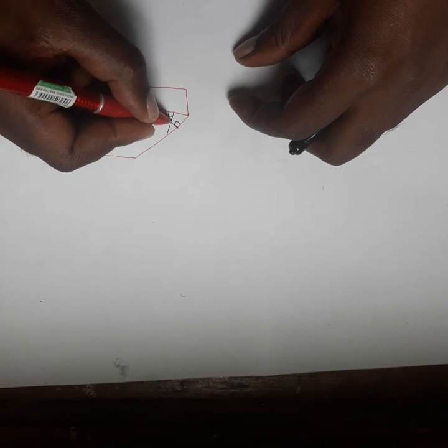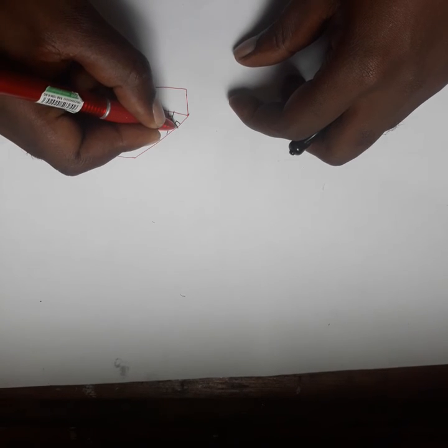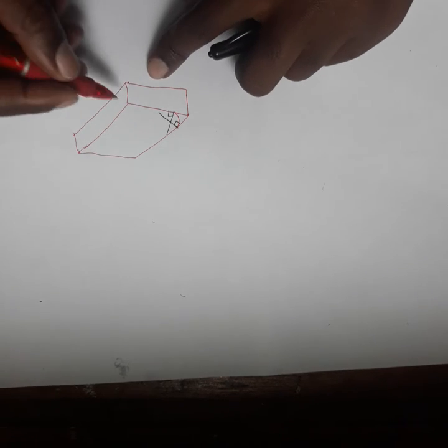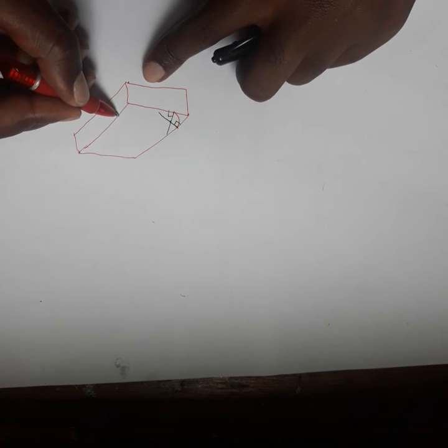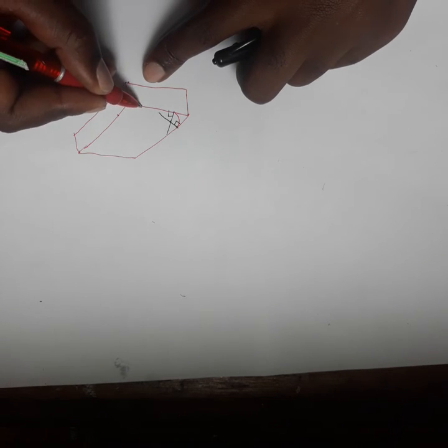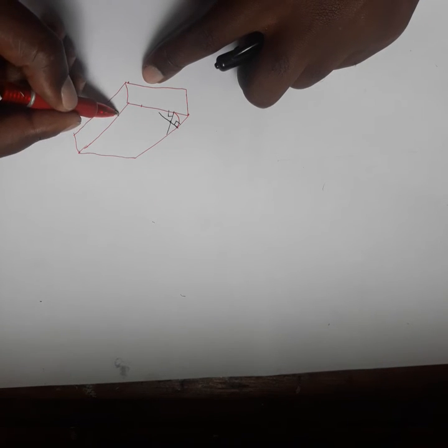Now you put your compass there. Put your compass from there to there, then you draw. Let's make it this side. From this point you drop your perpendicular line to this one.